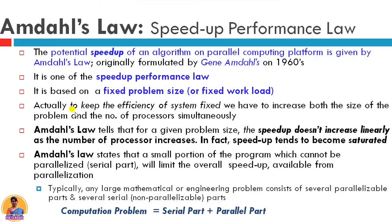This is Amdahl's Law: for a given problem size, the speed up does not increase linearly as we increase the number of processes. In fact, the speed up tends to become saturated — it reaches one point and does not increase further. This is because our computational problem is made of two parts: one is the serial part, where instructions are executed serially one by one, and the other is the parallel part, which we want to execute in parallel.